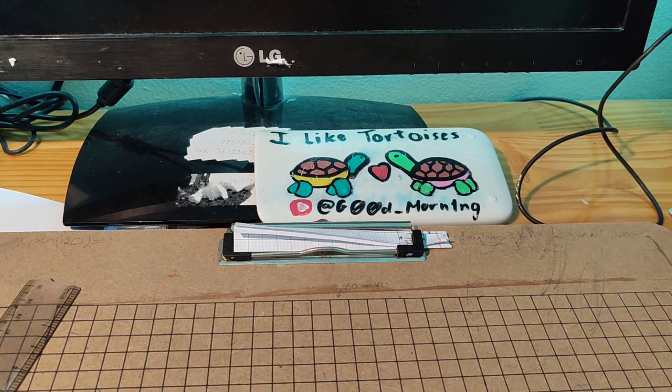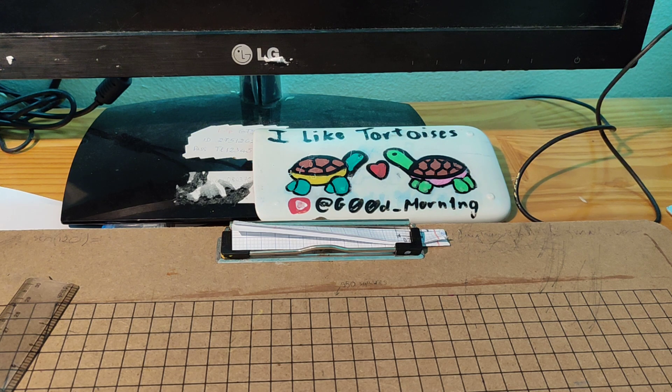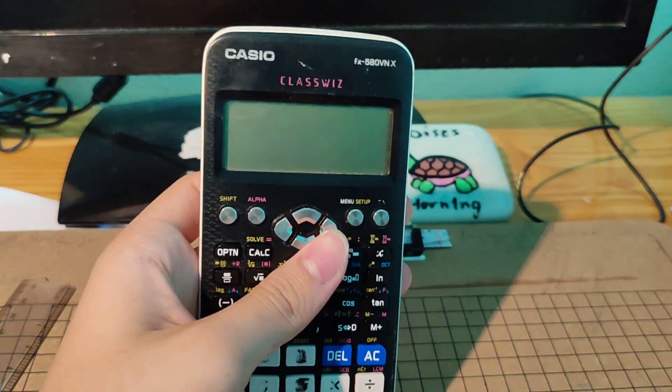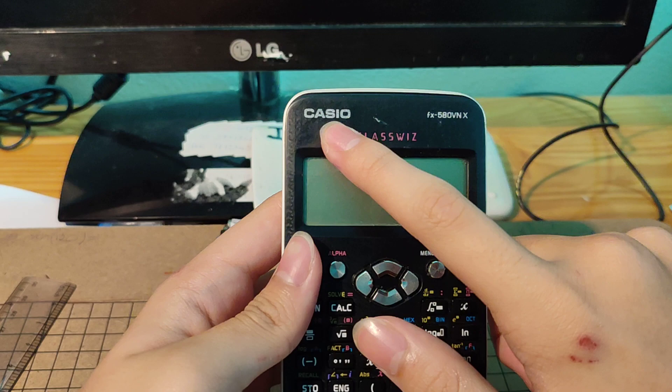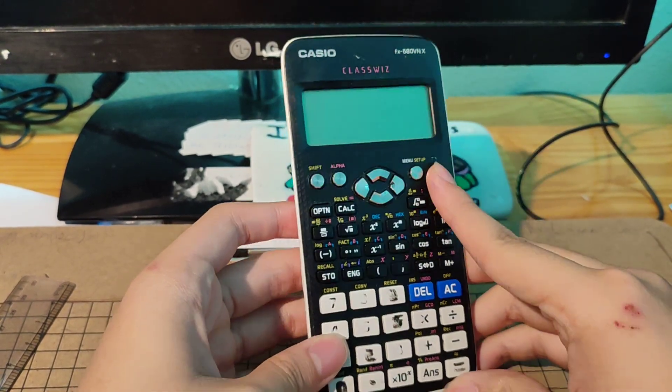Hello guys, it's me, I Like Tortoises. Long time no see! So today I am going to show you how to spell two lines with diagnostic mode on Casio FX-991EX. First we need to reset this calculator. This is the first step.